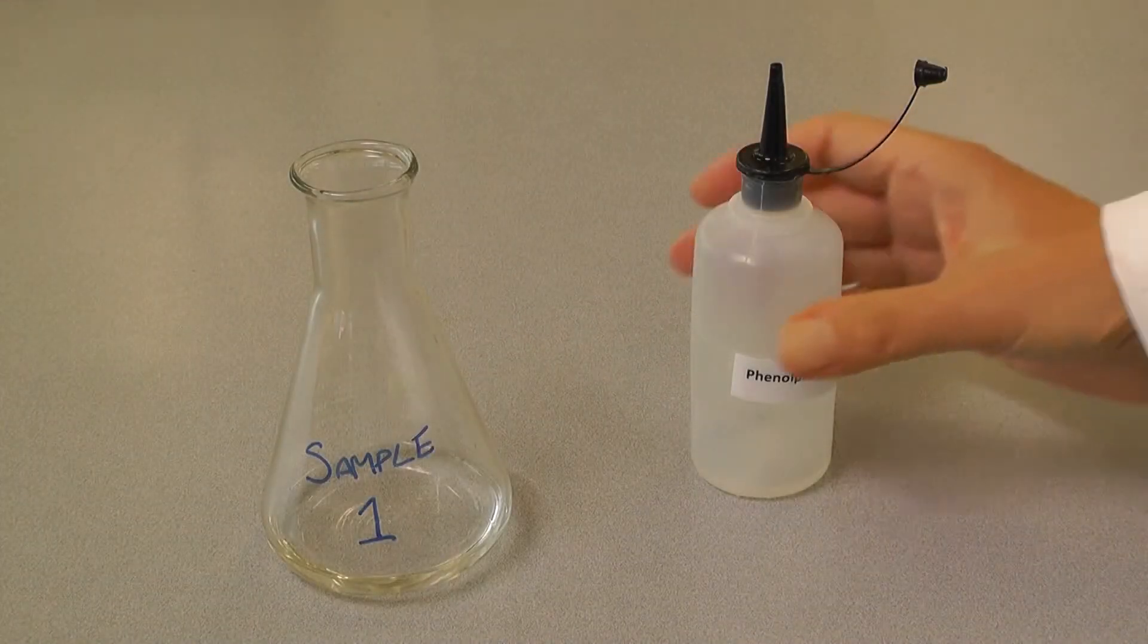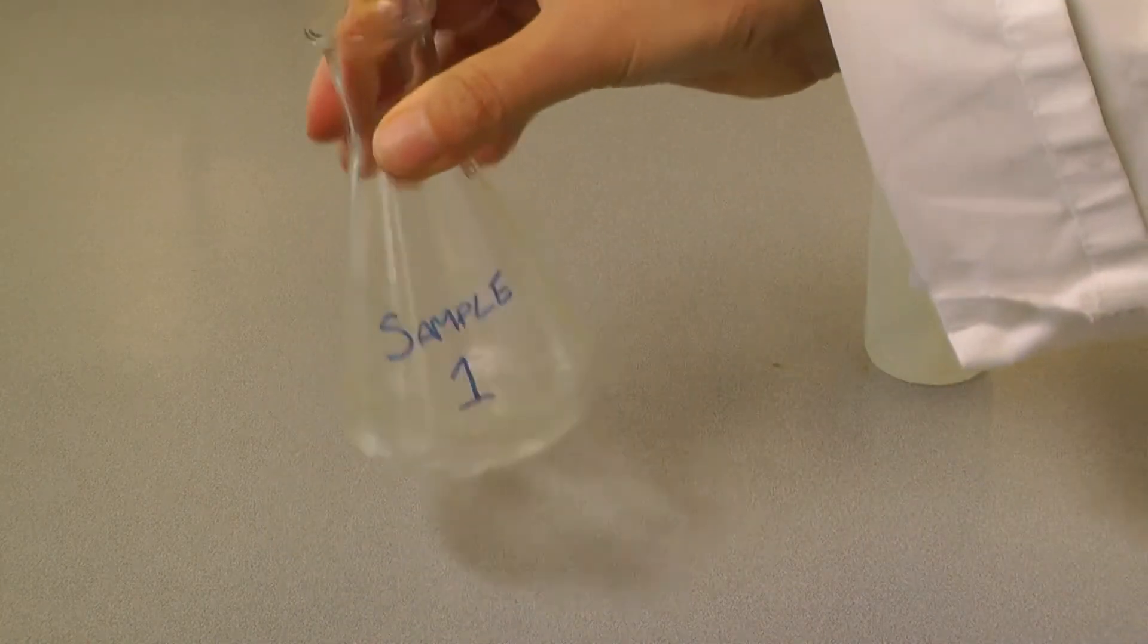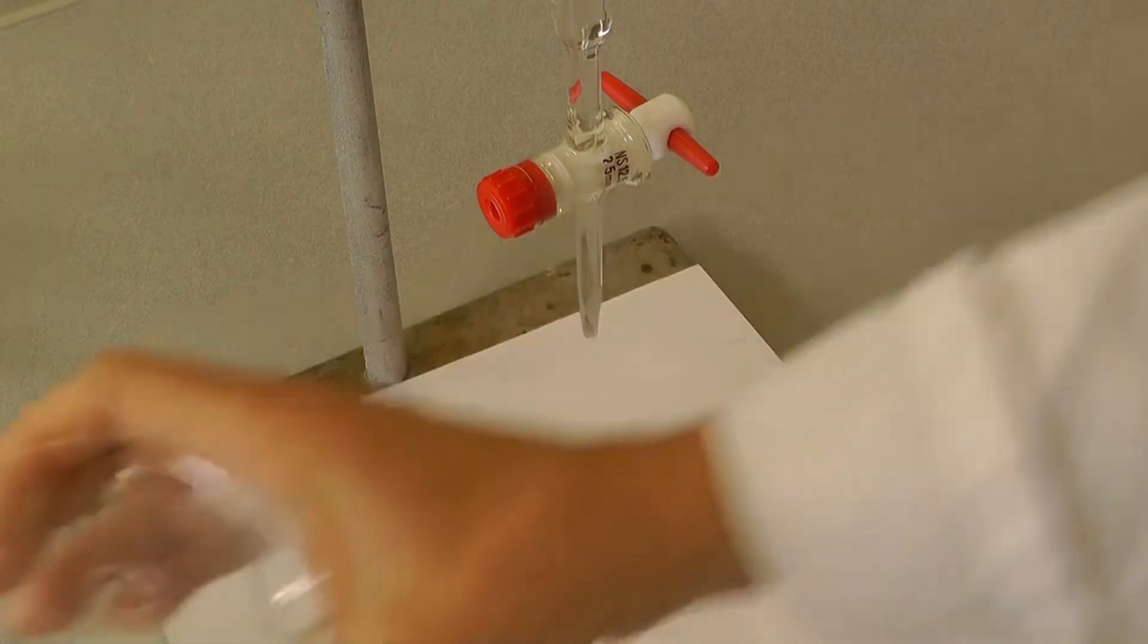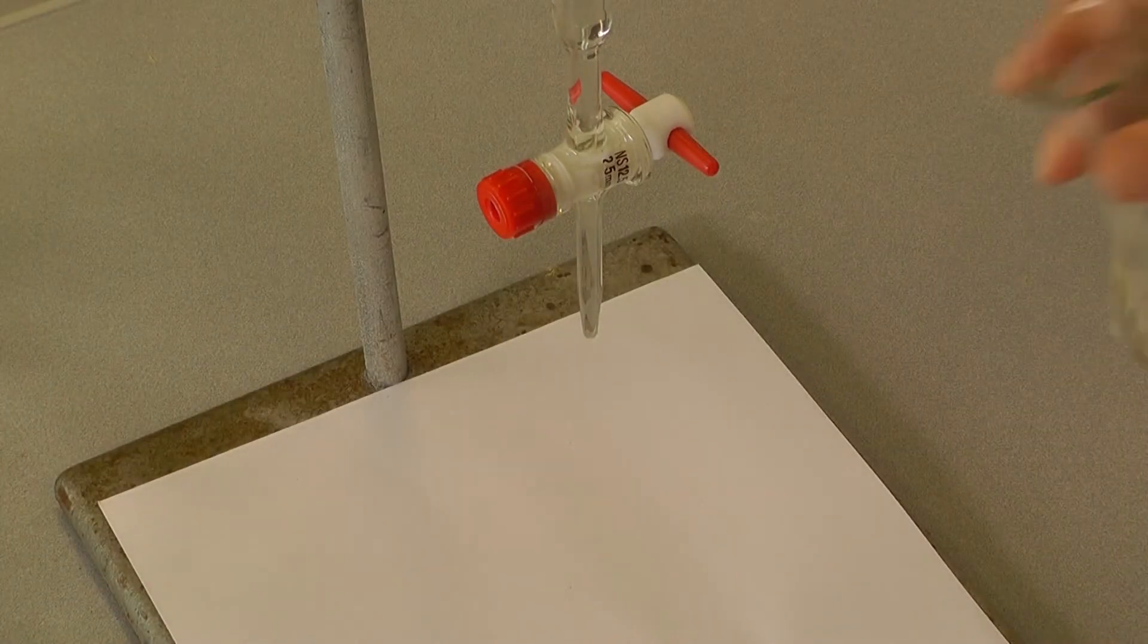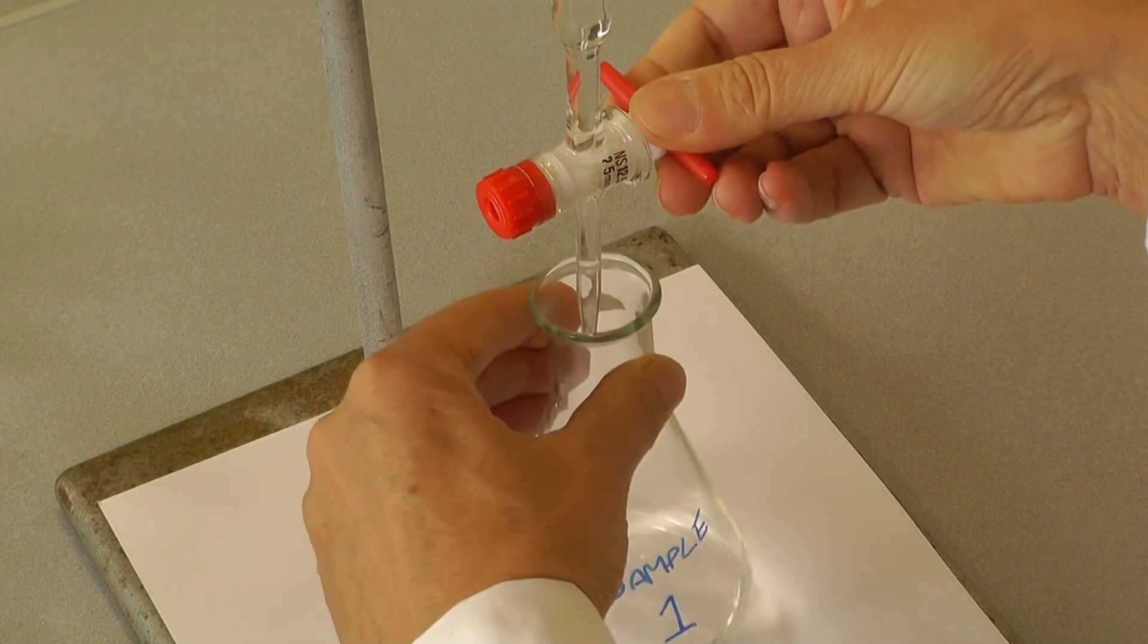Begin by adding a few drops of an appropriate indicator to your reaction flask and swirl gently to mix. Remove the waste beaker and place your flask underneath the burette. It is also a good idea to place a piece of white paper underneath the flask as it will make it easier to see the colour change.